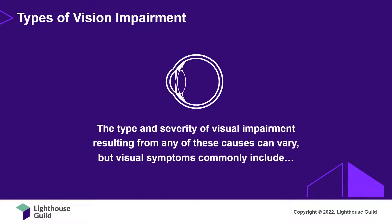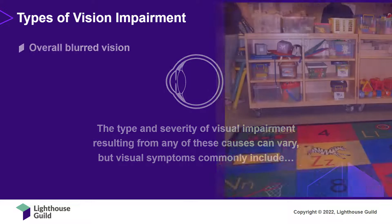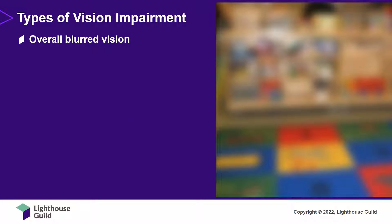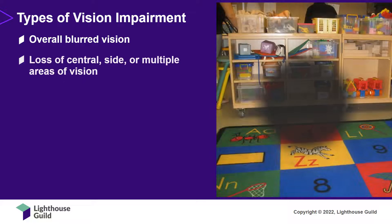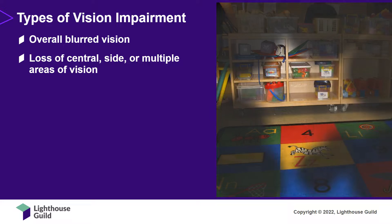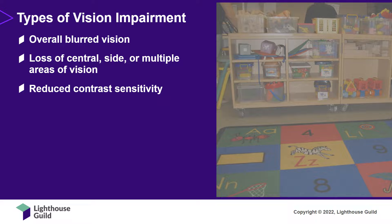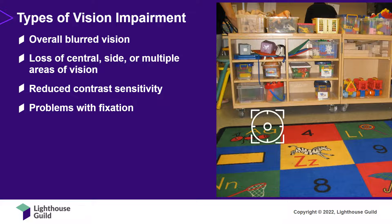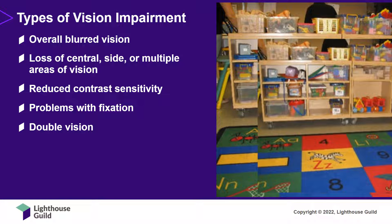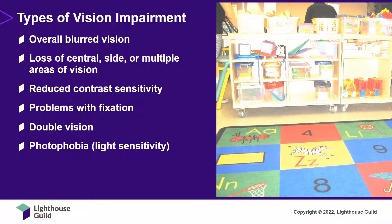The type and severity of visual impairment resulting from any of these causes can vary, but visual symptoms commonly include: overall blurred vision, causing objects and surroundings to appear blurry, hazy, or out of focus; central, side, or multiple areas of visual field loss, causing children to not see objects to the side or to bump into things while walking; reduced contrast sensitivity, making it difficult to distinguish objects from their background, like light-colored letters on a light background; problems with fixation, making it difficult to maintain visual gaze on a single target; double vision, causing one object to be seen as two; and photophobia, or light sensitivity, which can sometimes be severe and dangerous, especially when walking outside.